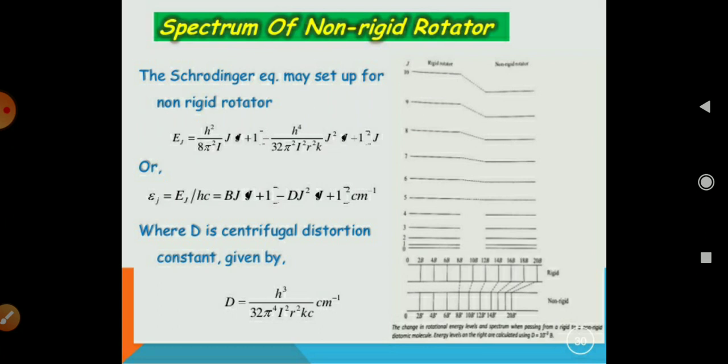And you can see here for the rigid rotor and for non-rigid rotor, the values are changed and our rotational energy levels are also changed. You can see that the energy levels in a non-rigid rotor is lower as compared to the rigid rotor.